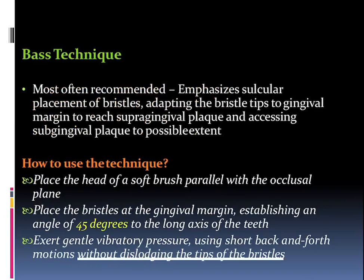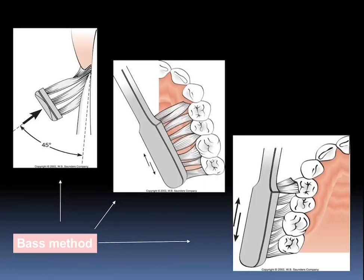Talking about these in detail: the Bass technique, which is most recommended, emphasizes circular placement of the bristles adapted such that the bristle tips are on the gingival margin, which removes supraginigval plaque and accesses subgingival plaque to a possible extent. We place the head of a soft toothbrush parallel to the occlusal plane, the bristles are placed at the gingival margin creating an angle of about 45 degrees to the long axis of the tooth, and then we exert gentle vibratory pressure using short back-and-forth motions without displacing the bristle tips.